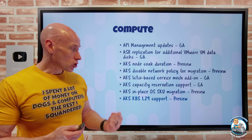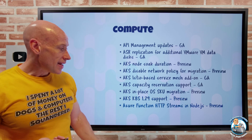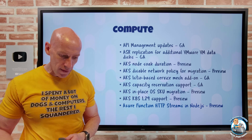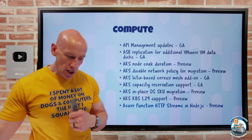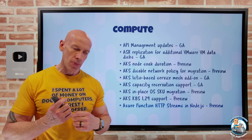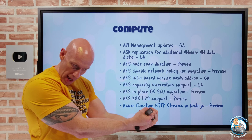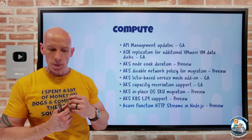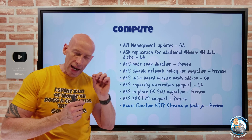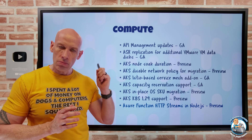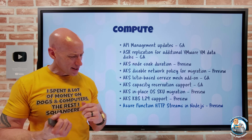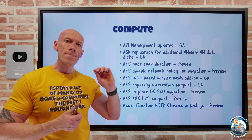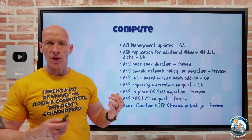Kubernetes 1.29 is supported in preview. And Azure Functions now support HTTP streams in Node.js in preview. Function apps can now stream — you can have HTTP requests coming in and responses going out, enabling real-time exchange of information between a client and server over an HTTP connection. Whether you're processing a large amount of data or delivering certain types of content, you can now use Azure Functions for that.